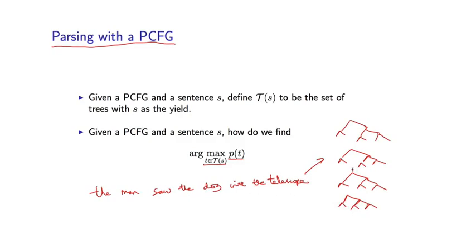That would be step one. In the second step, I would just calculate the probability of each of these trees, and I would choose the highest probability tree as the output from the parser.